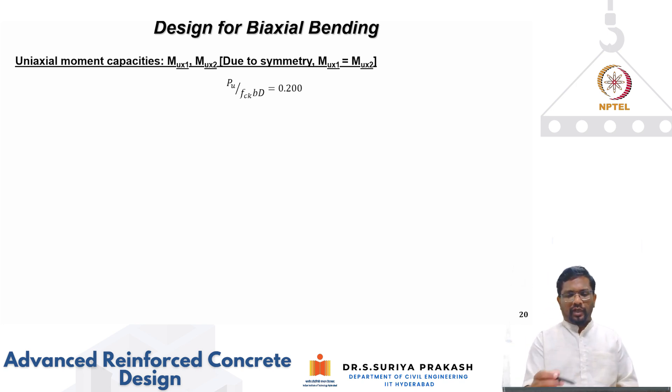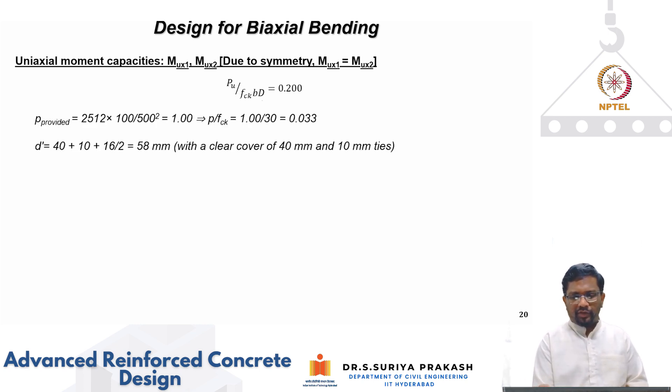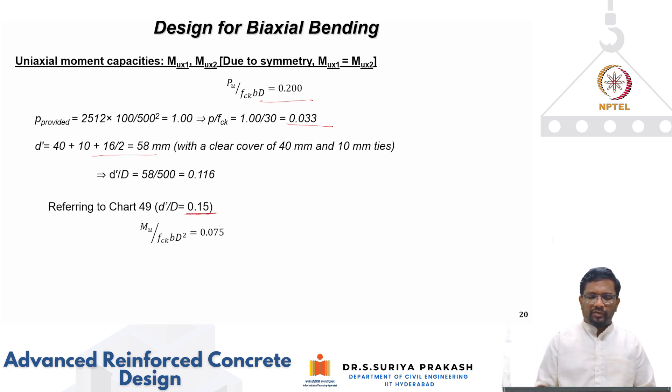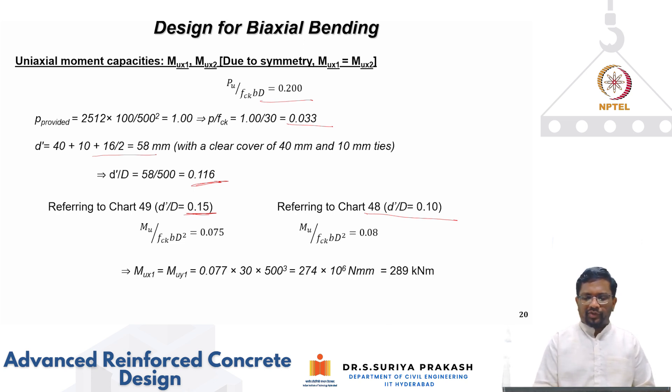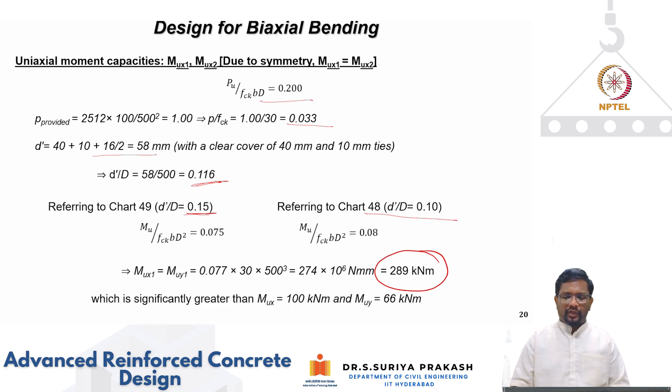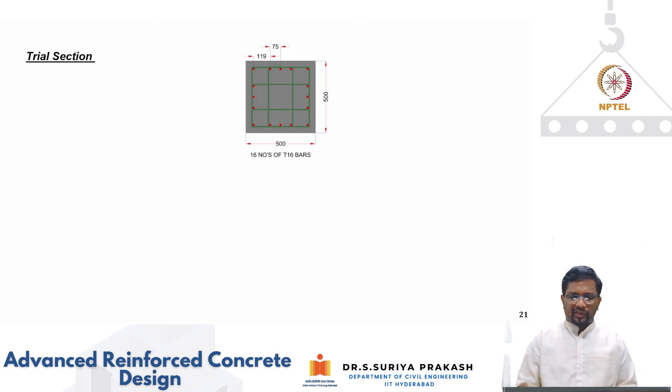Now let us check and calculate Mux1 and Muy1. So Pu by fck×b×d is 0.2, rho provided is this and d' is this. So we get these values and use chart of d'/d equal to 0.15. That will be conservatively estimated. If you want to be more close so you have to interpolate between chart 48 and 49. So you get after interpolation you find your uniaxial bending moment capacity is 288 kNm which is much higher than your design bending moment. These are trial sections.